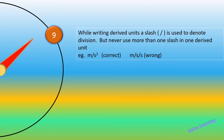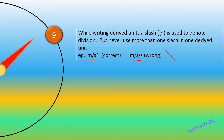The next rule: while writing derived units, a slash is used to denote division. For example, meter per second squared is written as 'm/s²'. However, never use more than one slash in one derived unit. Writing 'm/s/s' with more than one slash is incorrect. The correct form is 'm/s²' — only one slash in one derived unit.